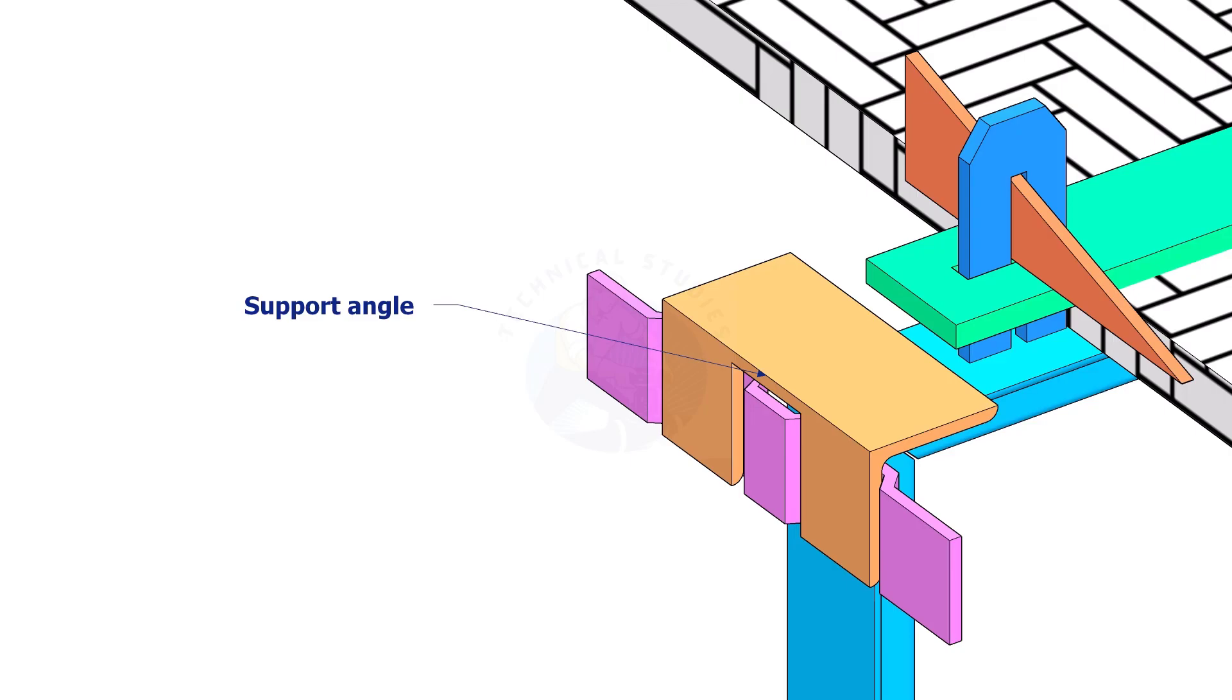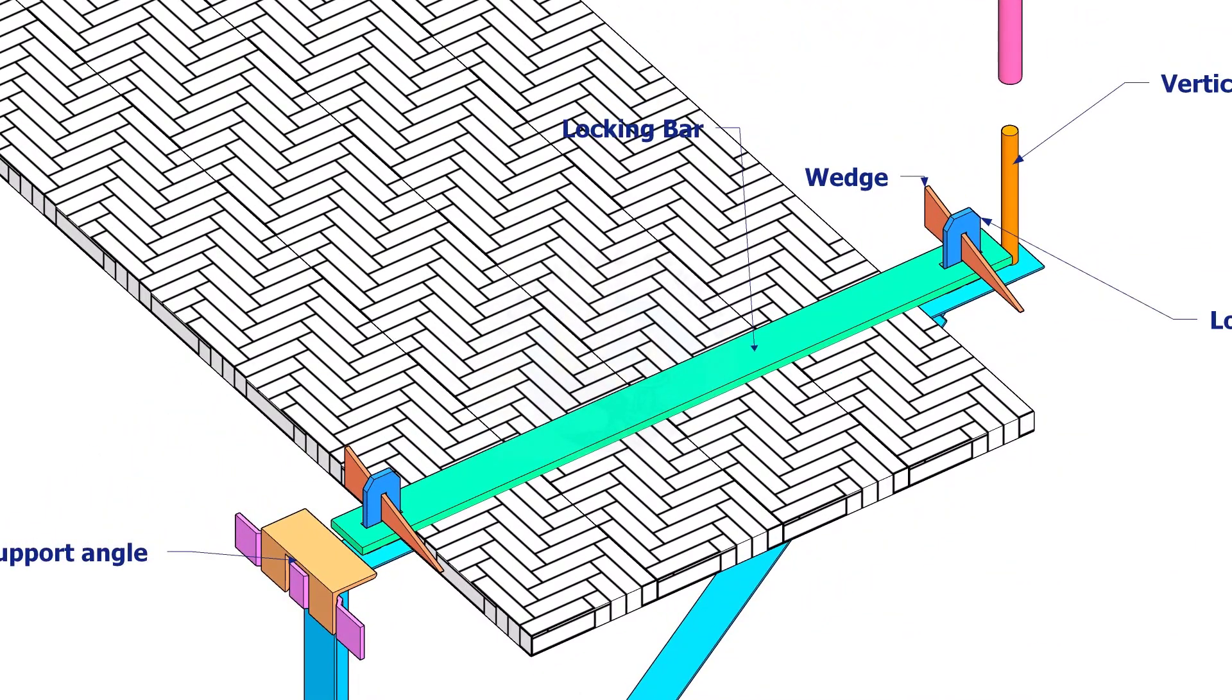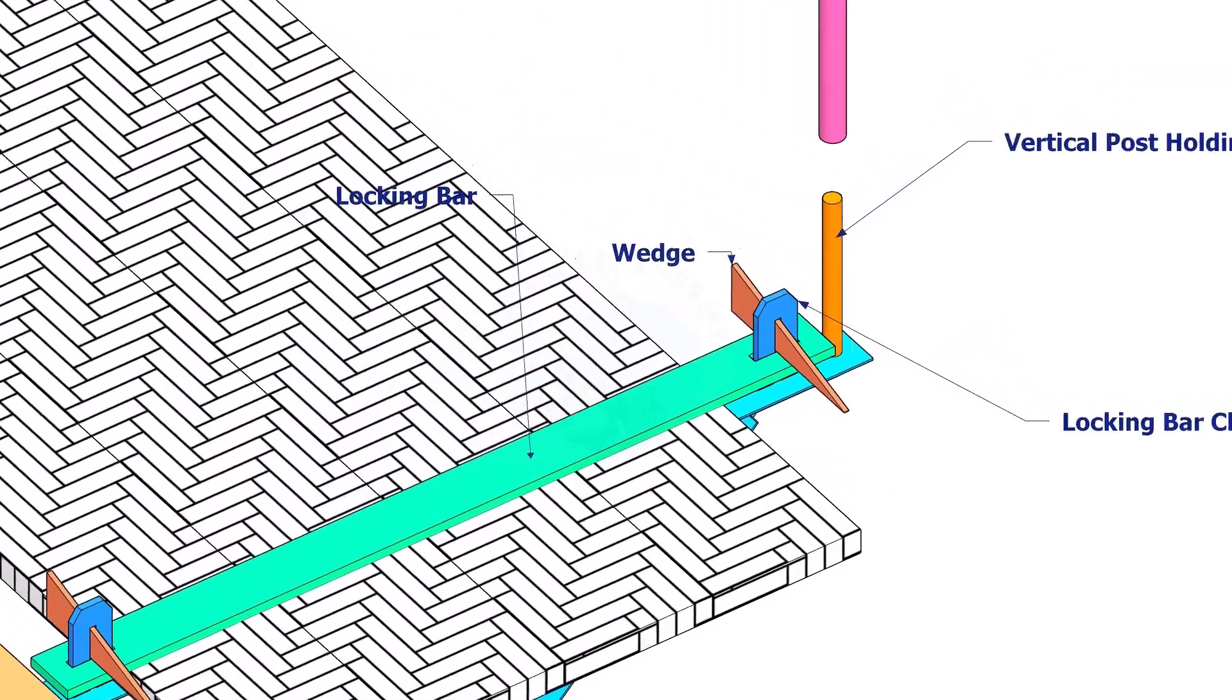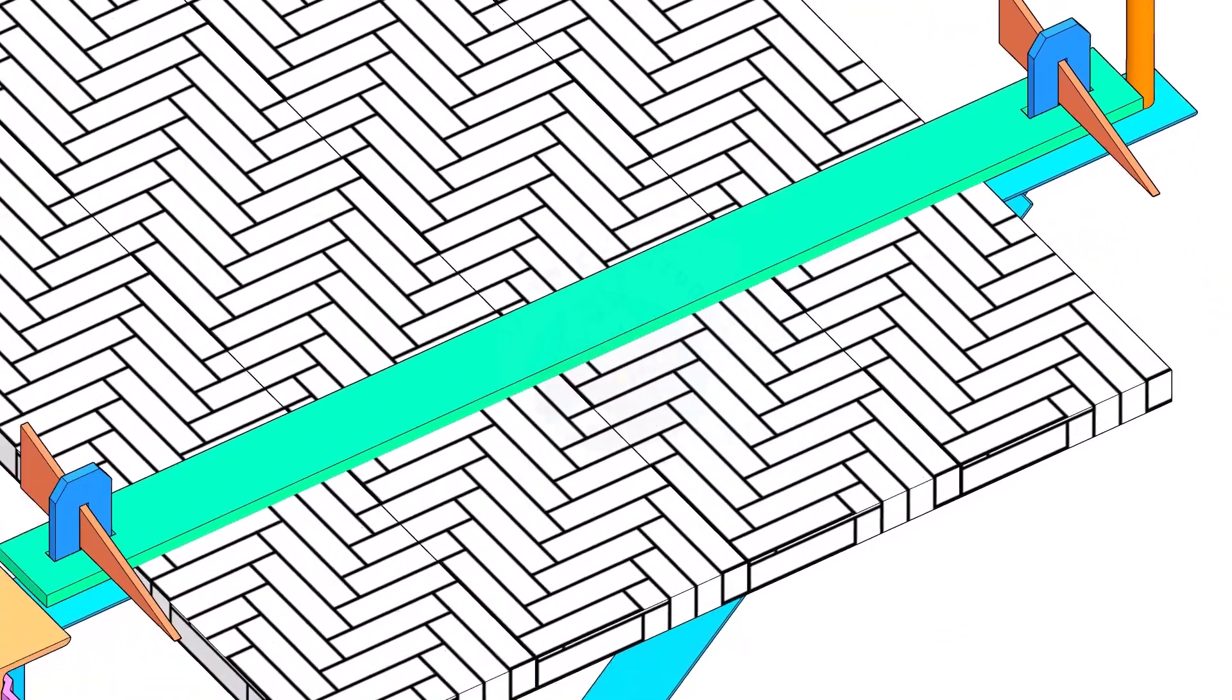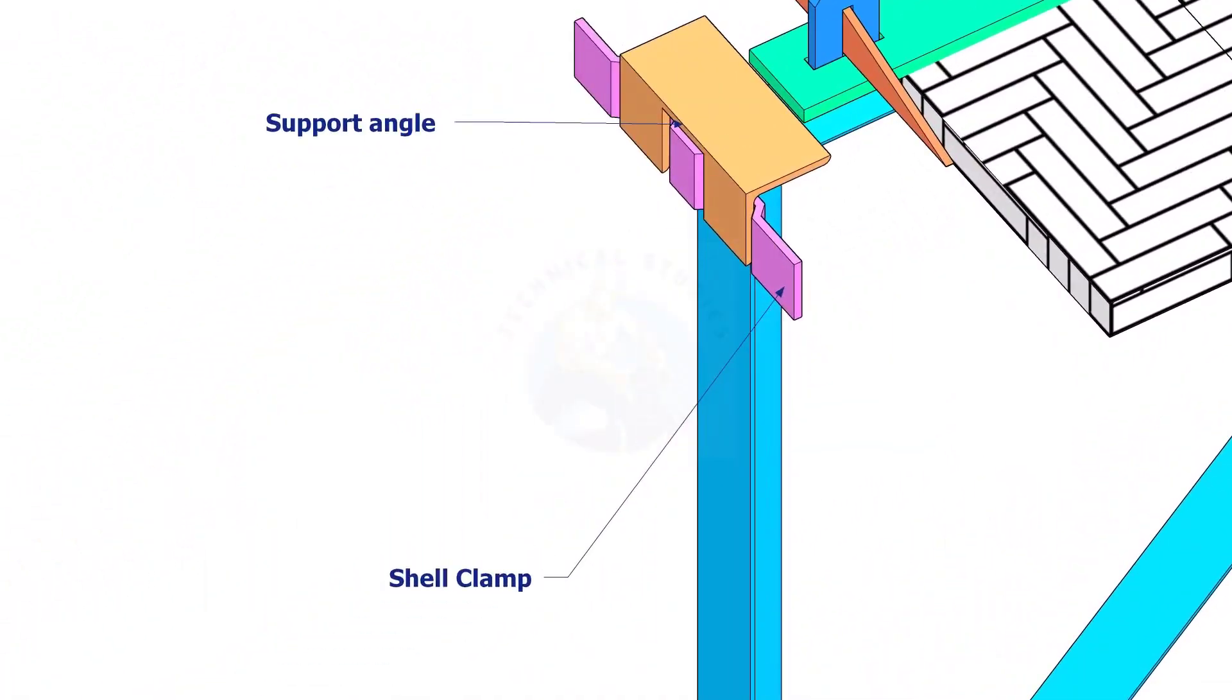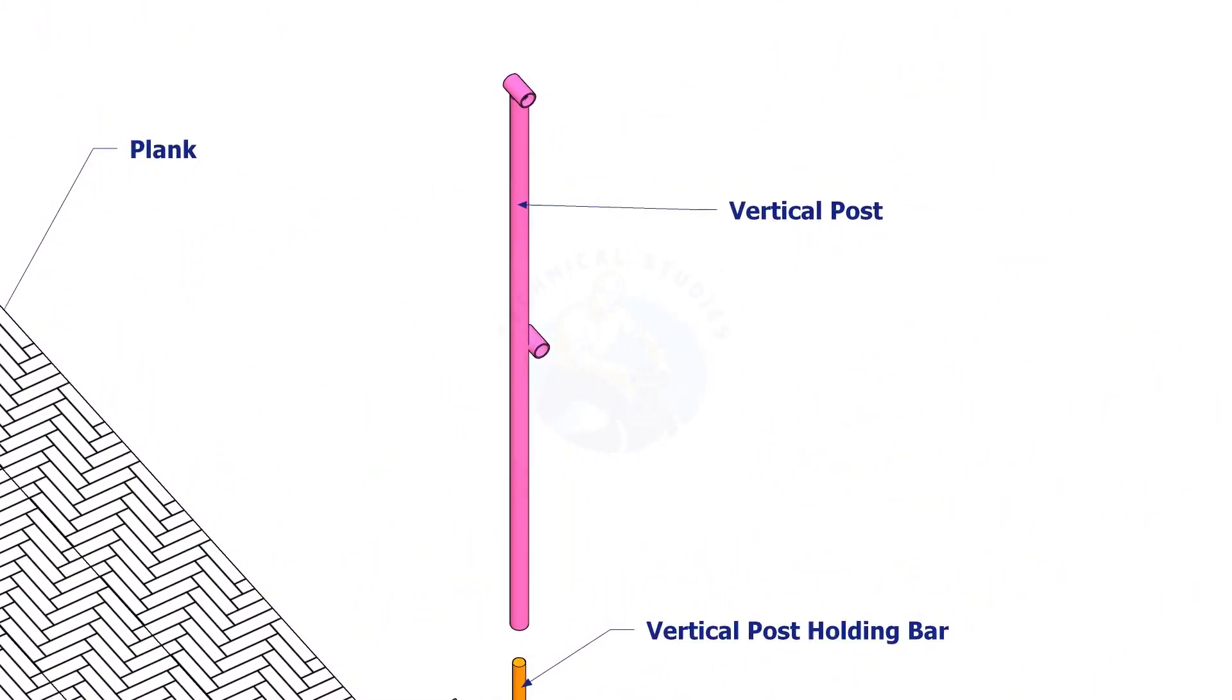Support angle shall be welded to the main frame. Vertical post holding bar will hold the vertical post vertically. Shell clamp shall be welded on the tank. Vertical post will hold the safety wire rope securely.